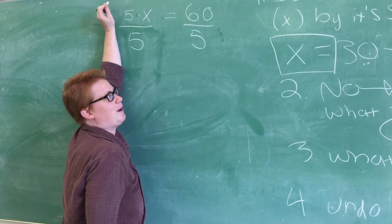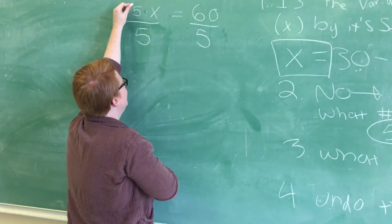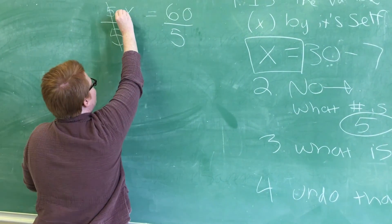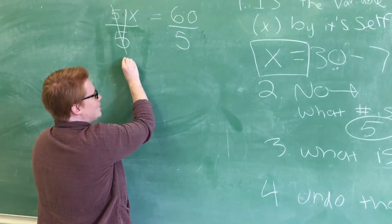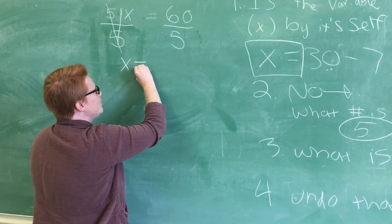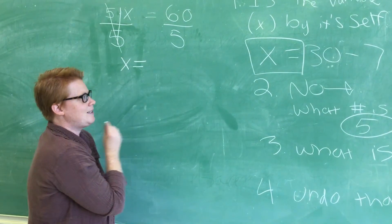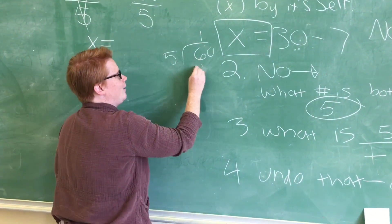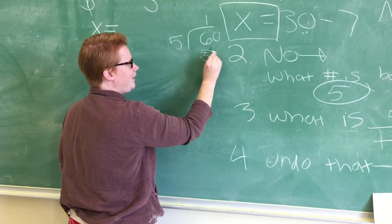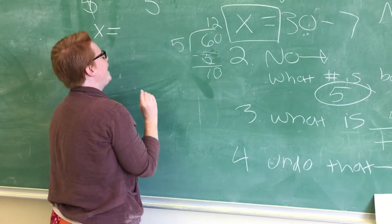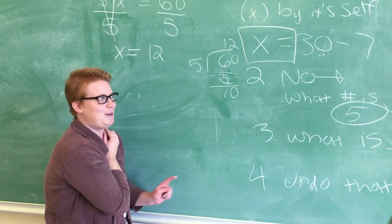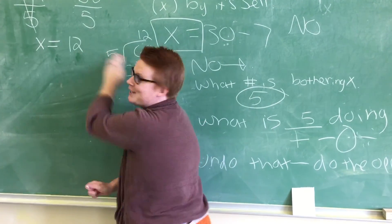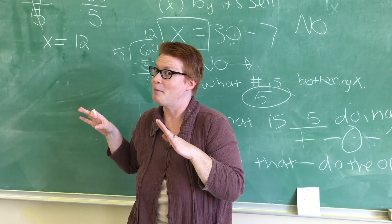5x divided by 5 — this goes away. What's left? Multiplication kind of went away with division. I'm just going to write this letter, x. Next is equals. And 60 divided by 5 — I can do a little long division. 5 goes into 60: 5 goes into 6 once, 1 times 5 is 5, 6 minus 5 is 1, bring down the 0, that's 10. So x equals 12. And then I go back: is x by itself? Yes! Because that means I'm done.